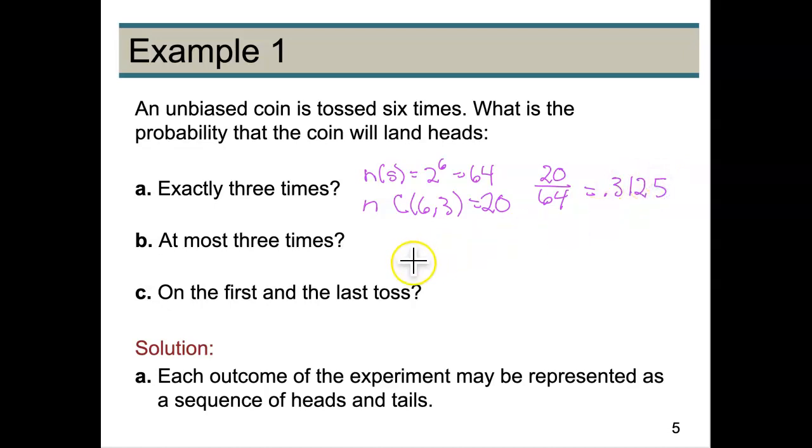What about if we do at most three times? So our denominator is still going to be 64, but at most three times we're going to have the probability that we have no heads, one head, two heads, or three heads.